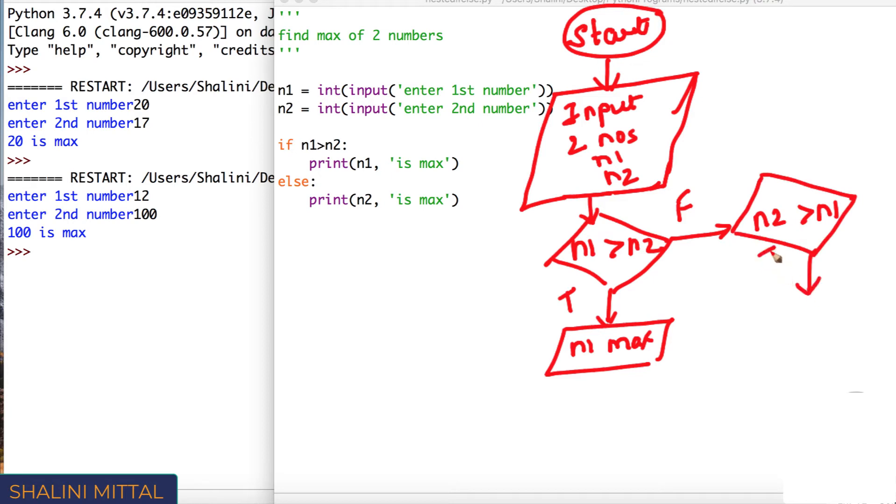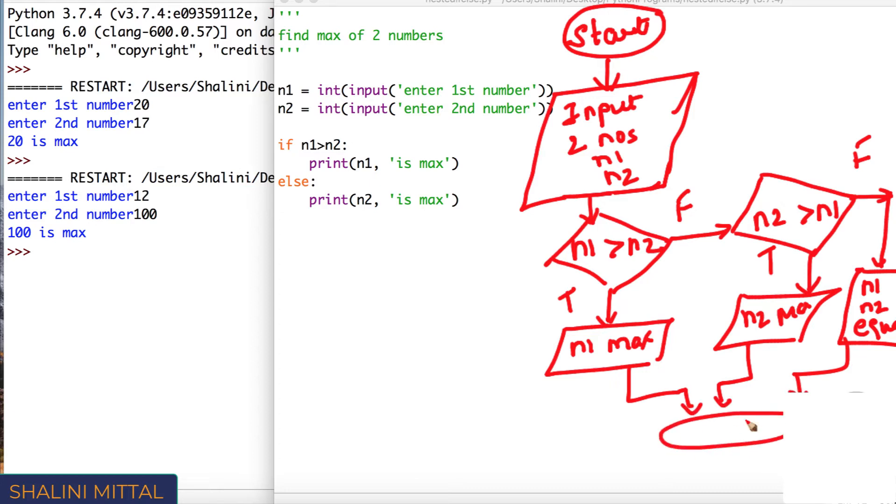If this is true, I'm going to print n2 is max. If this is false, in that case, I would want to print that n1 and n2 are equal and based on whatever it is, all the programs from wherever the control flows, they are going to stop.